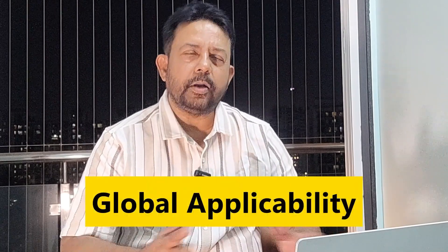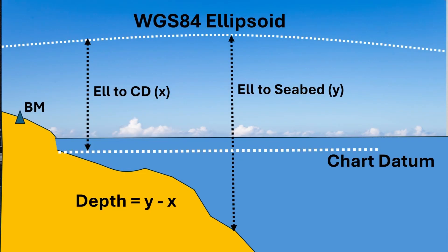ERS is more efficient as it reduces the need for extensive tidal observation and different tidal corrections. Traditional methods can be labor-intensive and time-consuming. It also allows for real-time data acquisition and processing, improving efficiency for hydrographic surveys. The use of a global reference ellipsoid makes data universally applicable, facilitating international collaboration and data sharing. If you have ERS data, all you need to do is apply the local chart datum to ellipsoidal separation data and that gives you the depth.